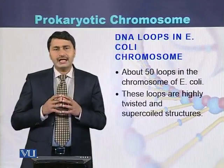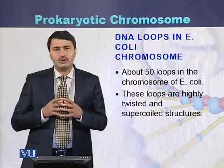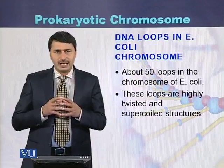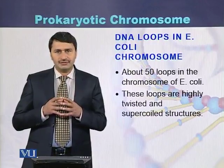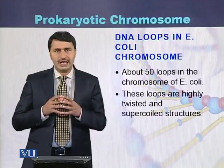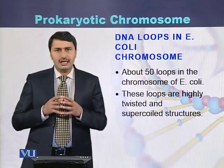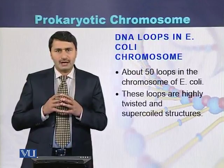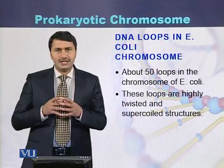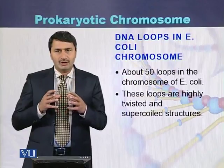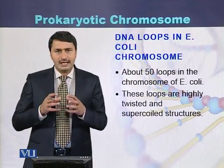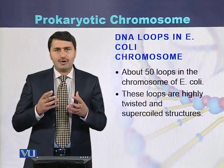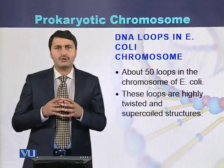DNA loops in the E. coli chromosome. There are approximately 50 DNA loops in the chromosome of E. coli. They are coiled and organized in the form of supercoiling.